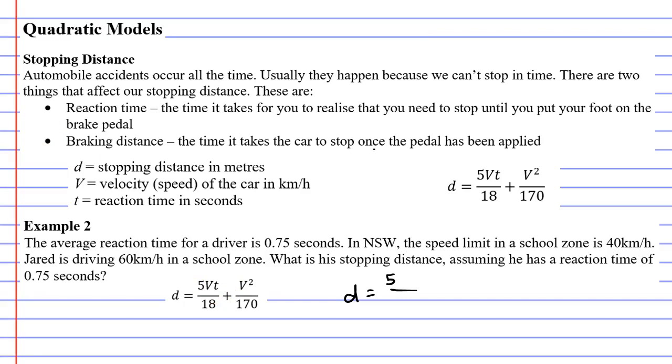So our velocity, or our speed, is 60 kilometres an hour, and our reaction time is 0.75 seconds. That goes at the top of our fraction here, and then 18 below it. When we look to the right at our next fraction, we can see that we've got velocity squared. So velocity was 60 kilometres an hour squared, and then at the bottom it's got the number 170.